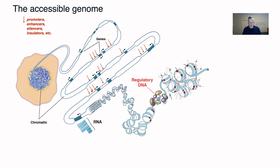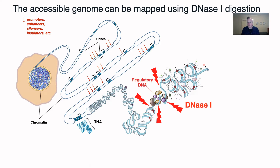Even though the majority of the chromatin is typically very tightly packed by way of this nucleosomal structure, there are regions that become opened up — become accessible — for DNA binding factors such as transcription factors that bind there. These little pieces of DNA that become accessible for transcription factors to bind, or in other words regulatory DNA, can be detected using an enzyme called DNase-1.